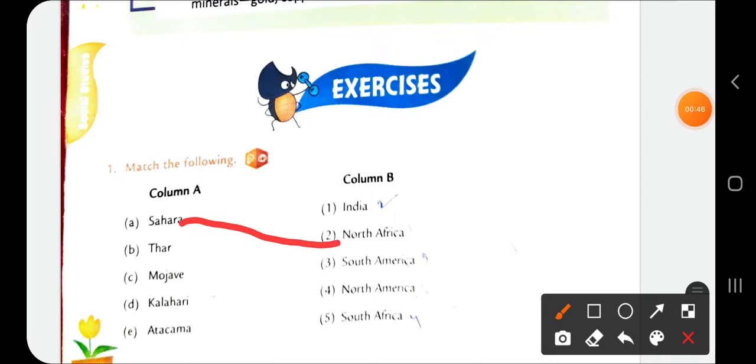Then Thar in India, Thar Desert in India. Then third one Mojave, Mojave in North America. Then Kalahari Desert in South Africa. Here comes, then Atacama in South America.